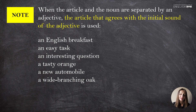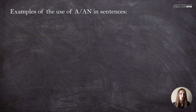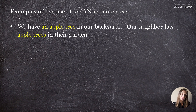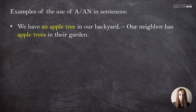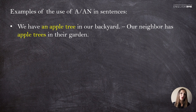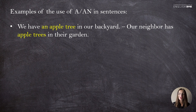Let's look at some sentences: 'We have an apple tree in our backyard. Our neighbor has apple trees in their garden.' In the first sentence we introduce new information — the interlocutor doesn't know about this apple tree — so we use 'an' because 'apple' starts with the vowel sound E. In the second sentence, though it's also new information, we don't use 'a' or 'an' because the noun is plural — it's 'trees.' The first mention of something in plural uses the zero article.